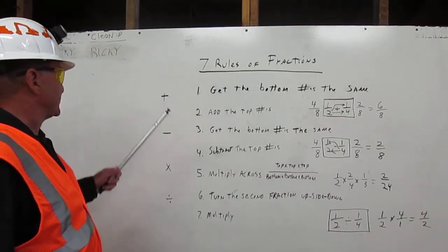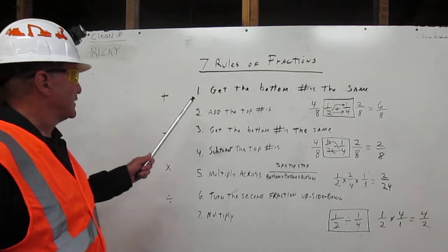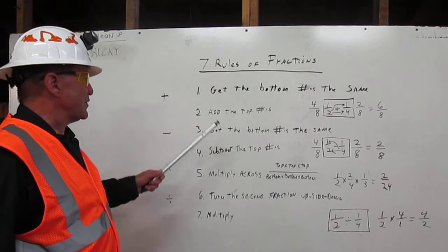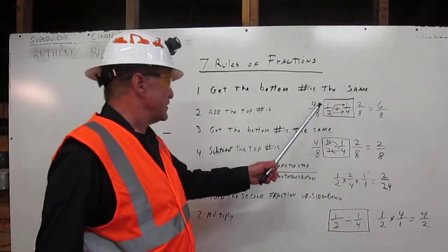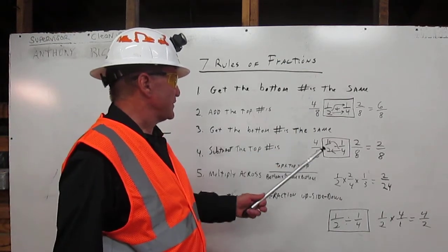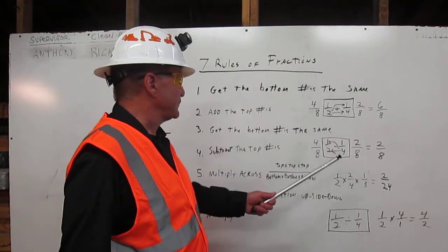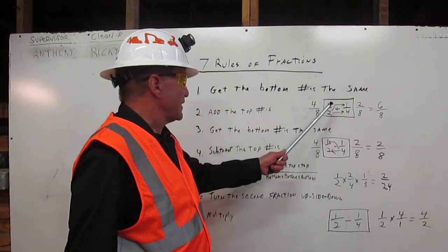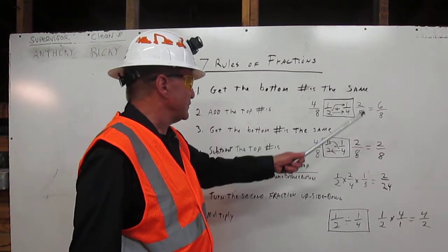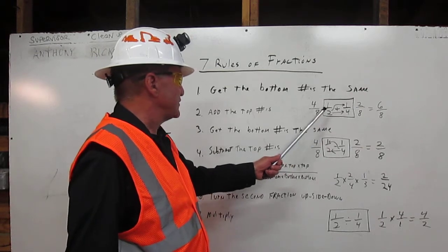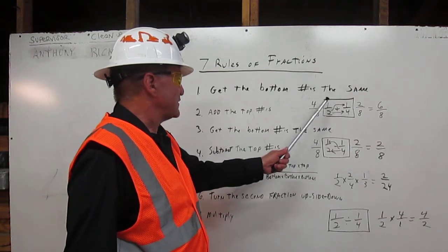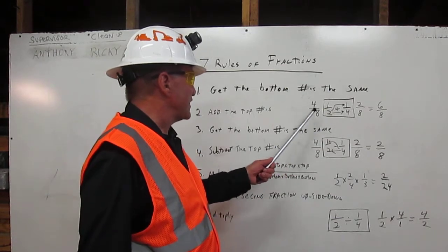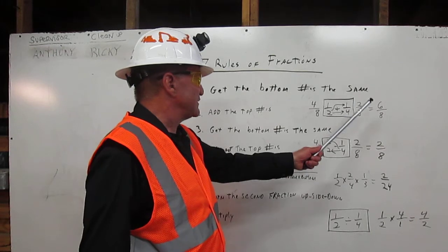Seven rules of fractions to add. First, get the bottom numbers the same. Second, add the top numbers. In our example, we're going to add one-half to one-fourth. The bottom numbers are not the same, so we're going to multiply two times four to get eight, and two times one to get two. Going the other way, we're going to multiply four times two to get eight, and four times one to get four. Now that the bottom numbers are the same, we're going to add four-eighths to two-eighths, which gives us six-eighths.